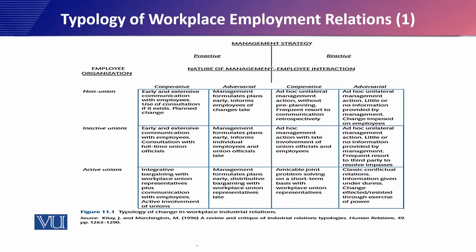If you pay attention to this slide, it is quite cumbersome — unfortunately there are a lot of things written on it. But if you understand it, it is not that complicated. The typology of workplace employment relations involves three choices. On the horizontal line you will see that non-union is one choice.